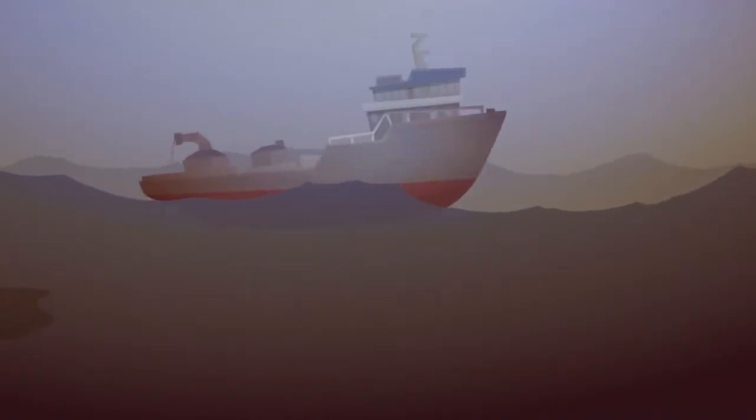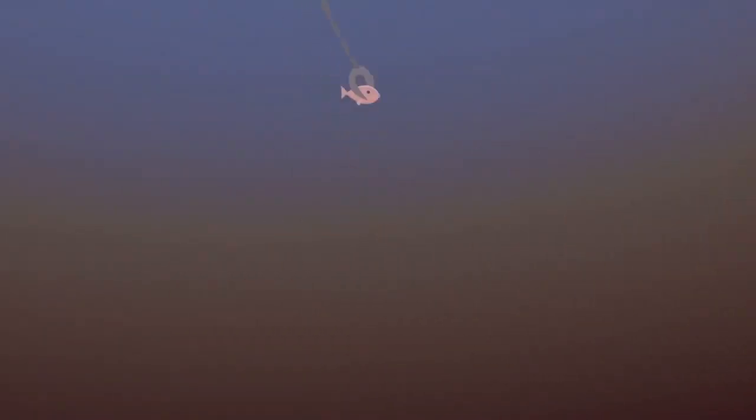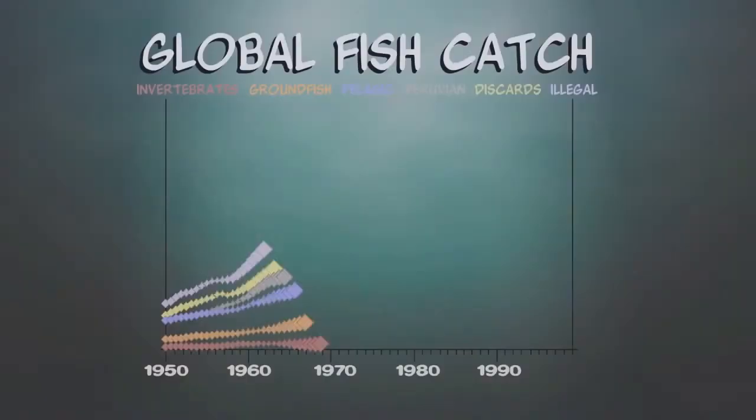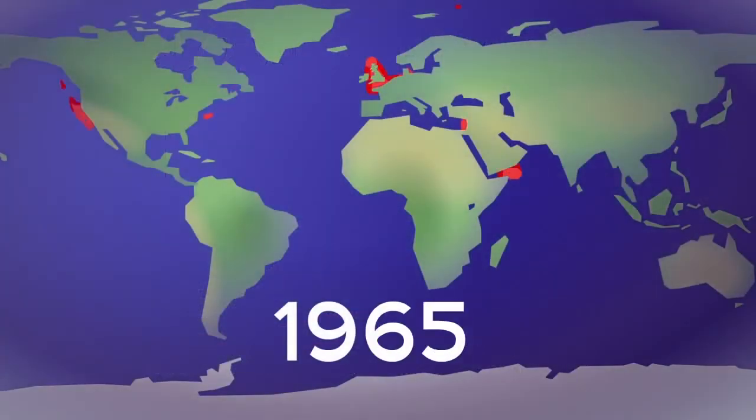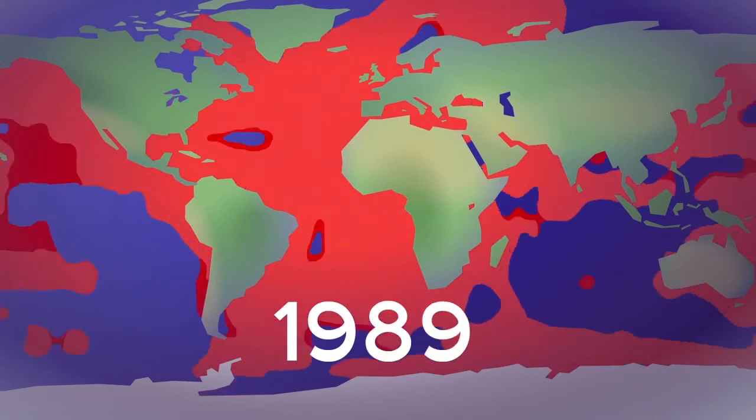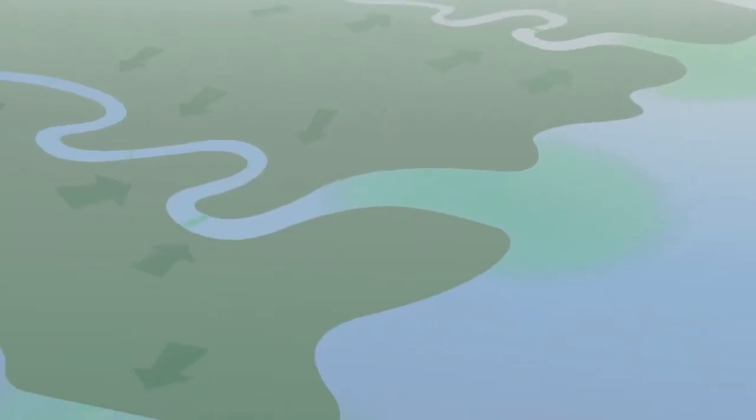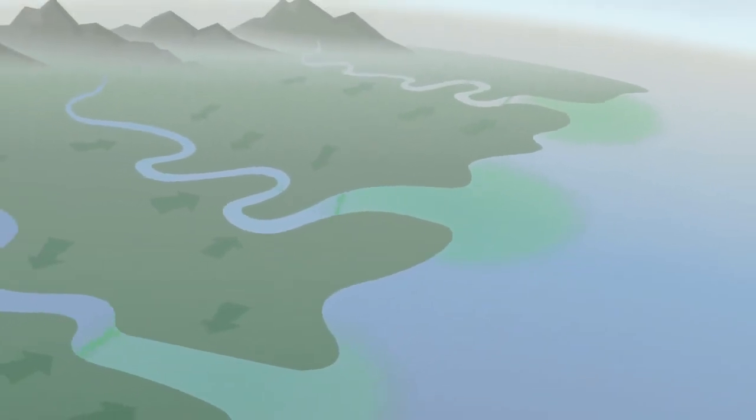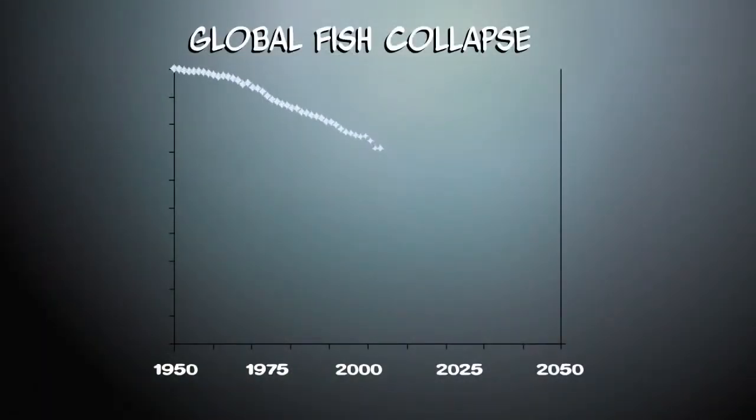Cheap energy, improved technology, and subsidies have allowed massive fish catches. Global fish catches peaked in the late 1980s, forcing fishermen to move into deep waters. Nitrogen runoff by fossil fuel-based fertilizers poisons rivers and seas, creating enormous dead zones. At this rate, all fish populations are projected to collapse by 2048.